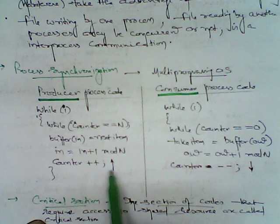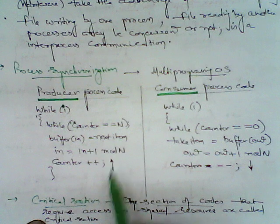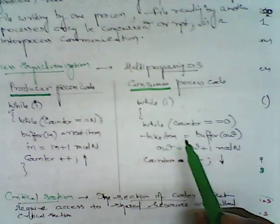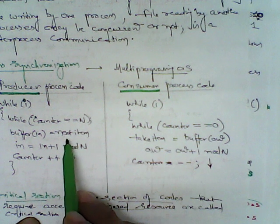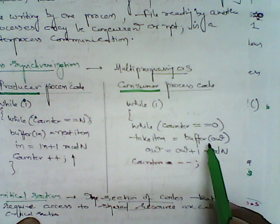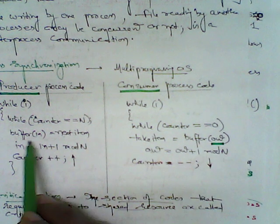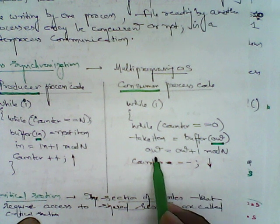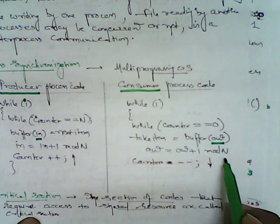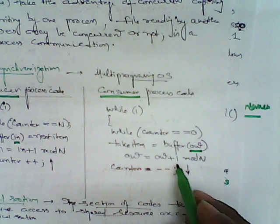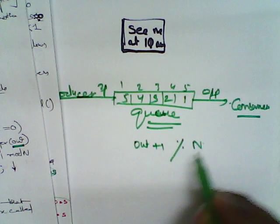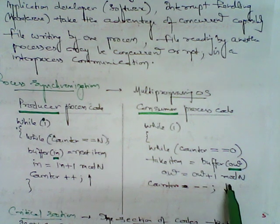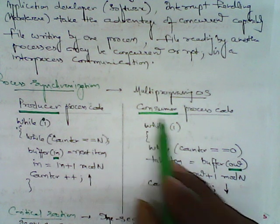On the consumer side, counter equals 0. Whatever item is to be taken is taken from buffer out. The formula is: out = (out + 1) mod n, which can also be written as out = (out + 1) % n. The counter is decrementing — consumer is consuming and every time it decrements. This is process synchronization: synchronization must exist between producer and consumer. If a producer puts five inputs, the consumer has to consume five outputs; otherwise it will be blocked.